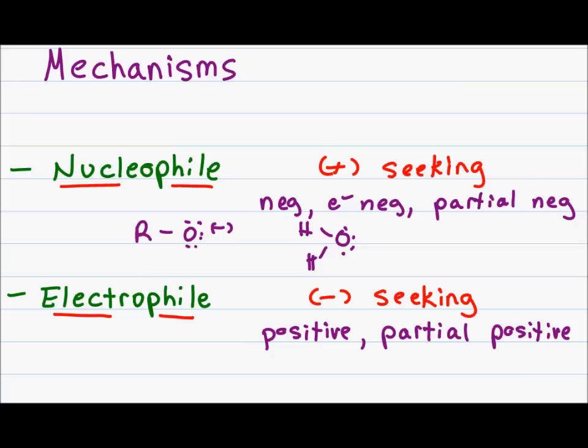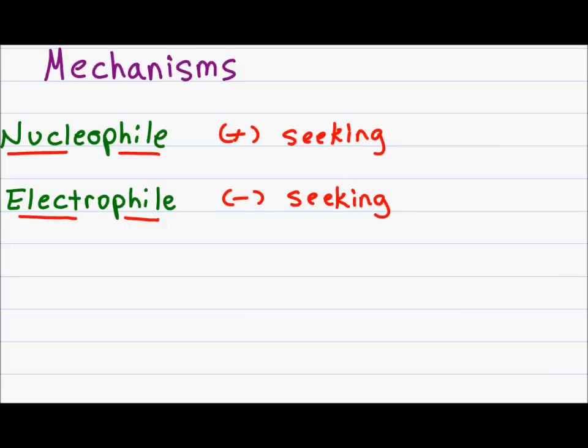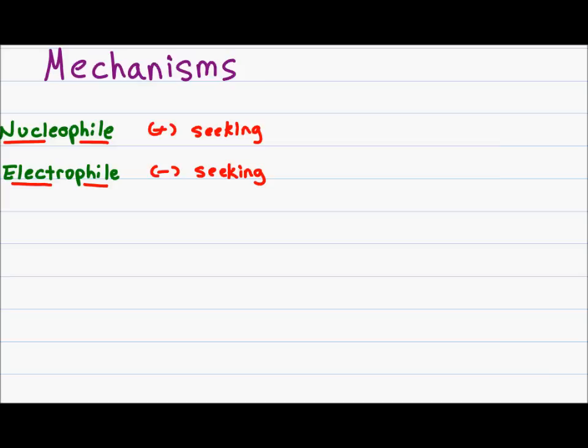An electrophile will be a positive or partially positive atom or molecule — such as a proton or the positive end of a nitronium or hydronium. As you start to get familiar with mechanisms, recognize that every mechanism starts with a nucleophile attacking an electrophile, some transfer of charge, and a new nucleophile attacking another electrophile until the reaction is complete.